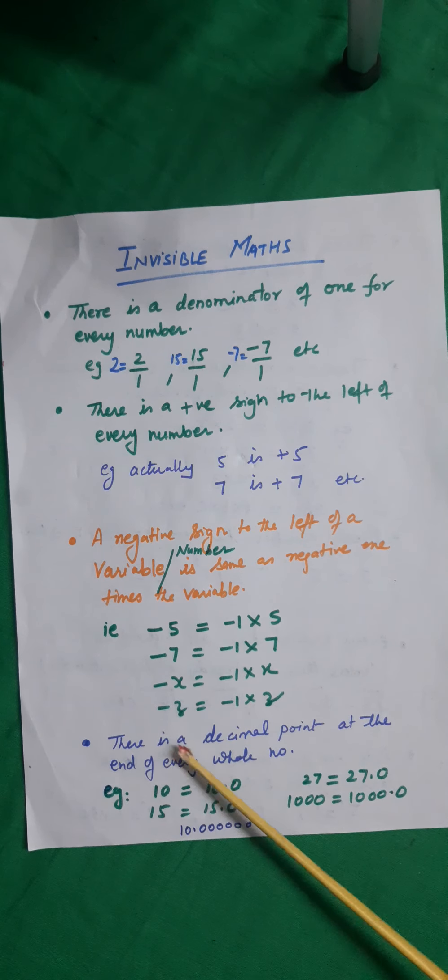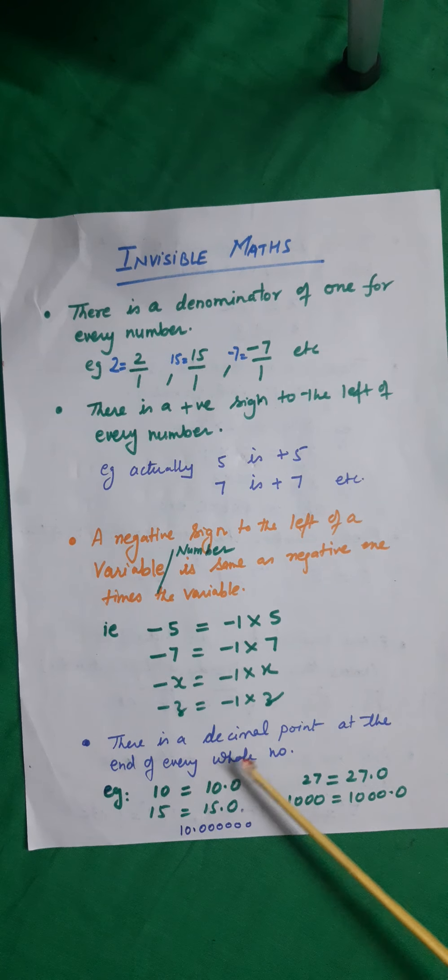Next, there is a decimal point at the end of every whole number. 10 can be written as 10.0, 15 as 15.0, 27 as 27.0, and 1000 as 1000.0.